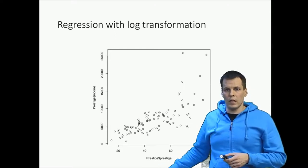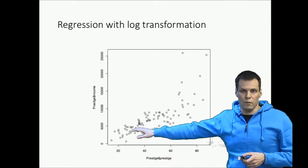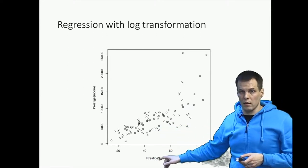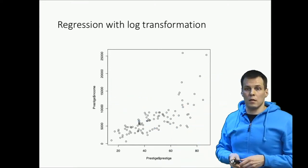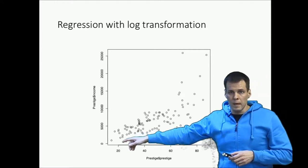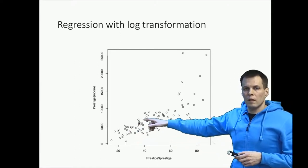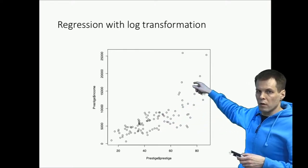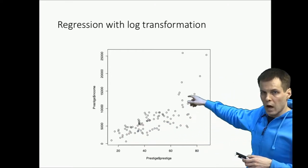So this is the example data set from the Prestige data set. These are occupations from the Canada census of 1970 something. And we have Prestige score of an occupation and then the average income of an occupation. We're interested in learning how much income depends on Prestige. We can see that there is a linear effect here. Prestige goes from 20 to 80.